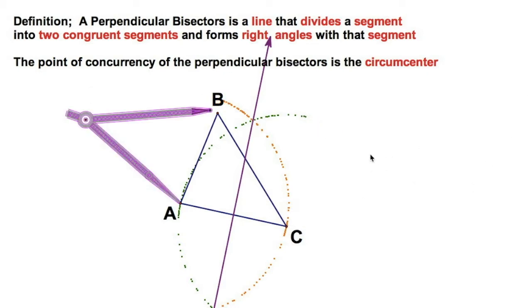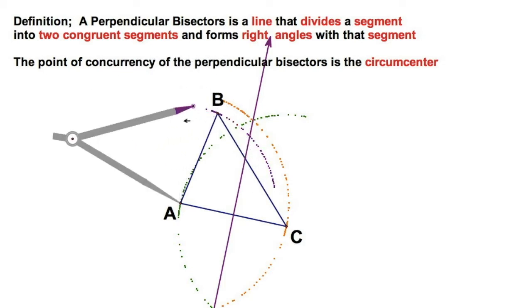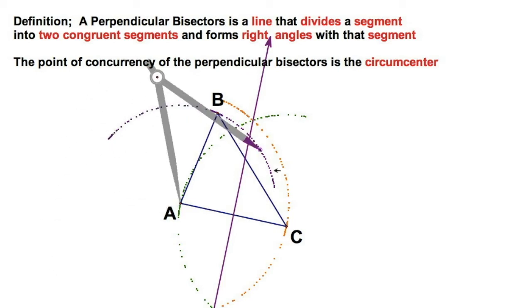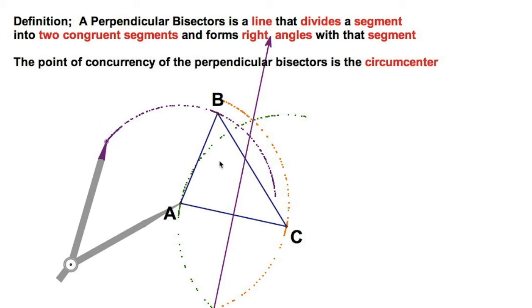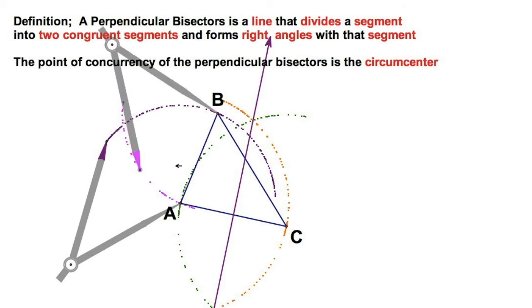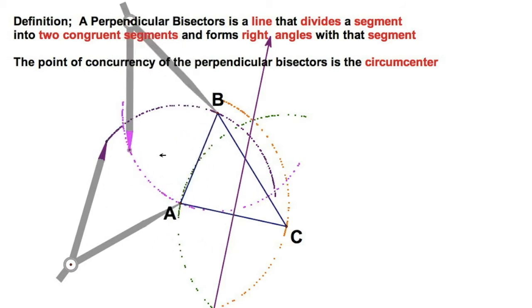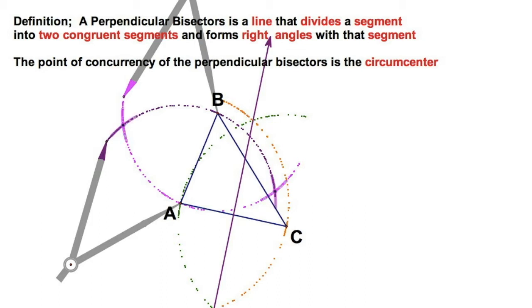Now I'm going to perform the same construction for the next side. Needle on A, gap it to B, swing the arc far enough to go through the expected intersection. Then gap the compass the other way — B gapped to A — give it a swing. You've got those two intersections right there. Line up your straight edge with those spots.